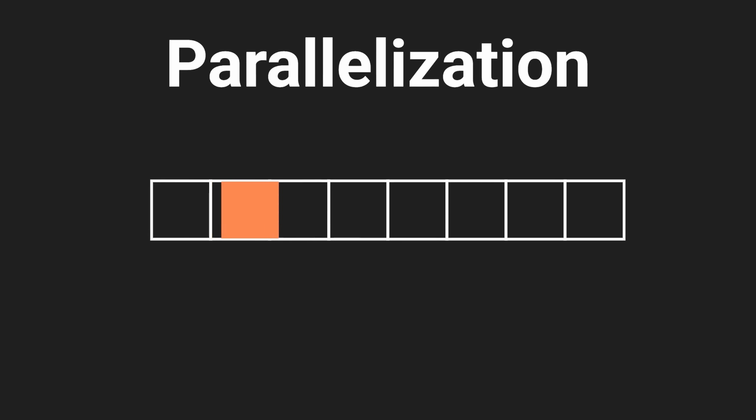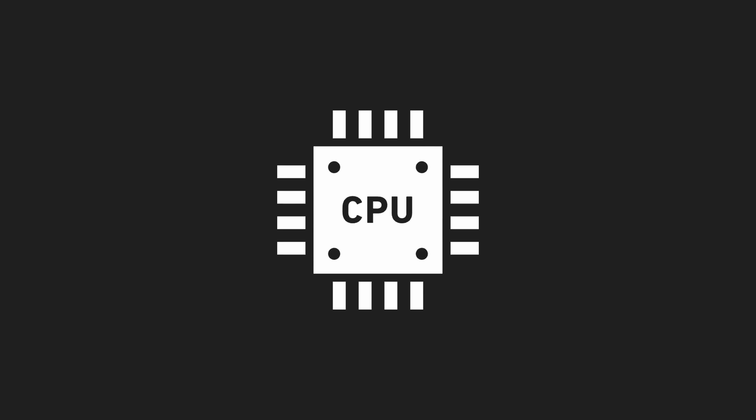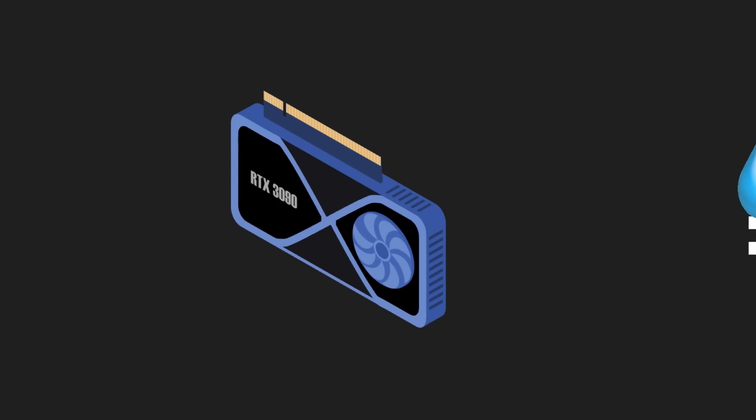There are a few solutions to this problem, but the one I want to try to implement is called parallelization. Instead of doing our algorithm on each cell one at a time, what if we could do the calculation for all of them at once? We'd get a massive performance increase. The only problem is that computers are generally designed to work sequentially — the CPU isn't really built for this kind of parallel programming. Luckily, modern computers have another unit which is an expert at this exactly: the GPU.